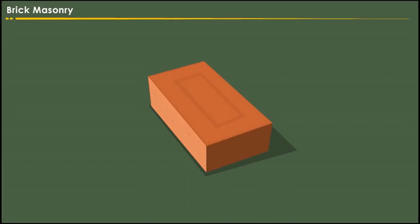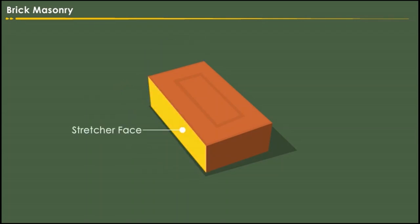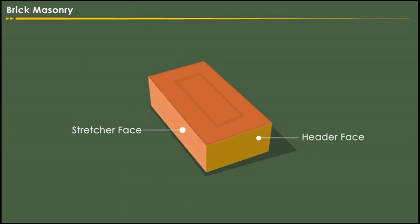The general size of the modular brick is 190 mm × 90 mm × 90 mm. Let us learn about the different dimensions of a brick. This is the stretcher face, and this is the header face.